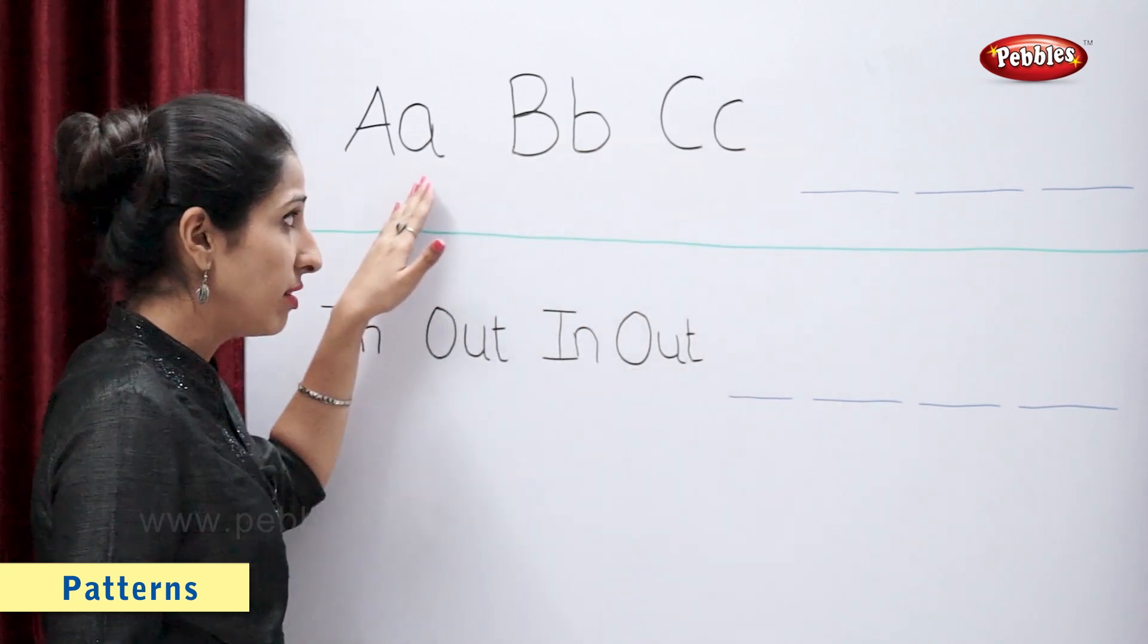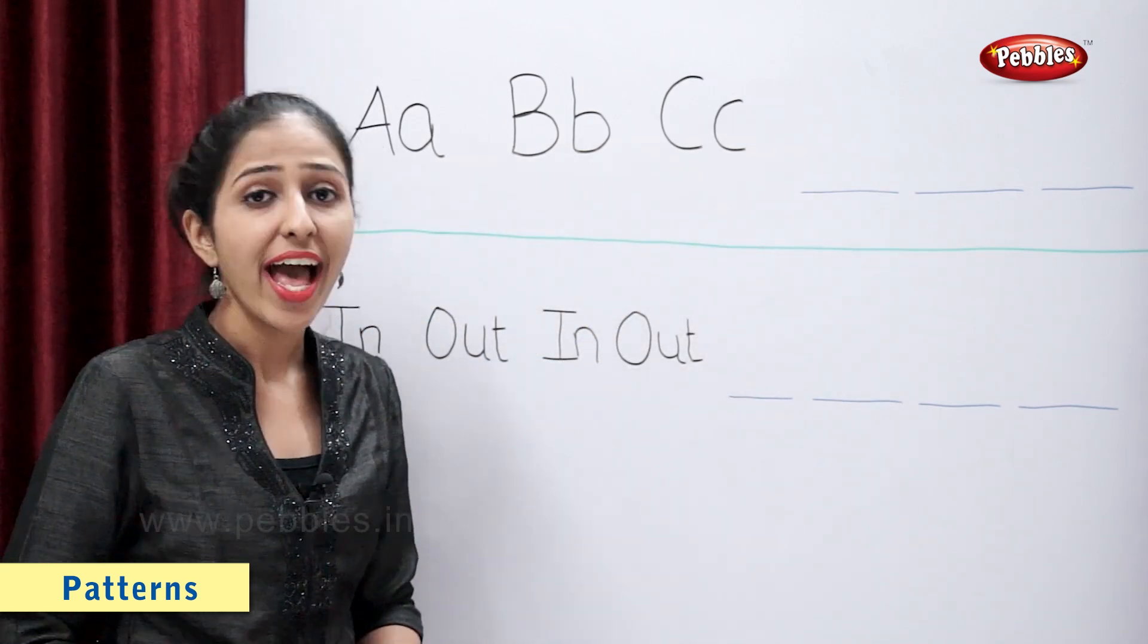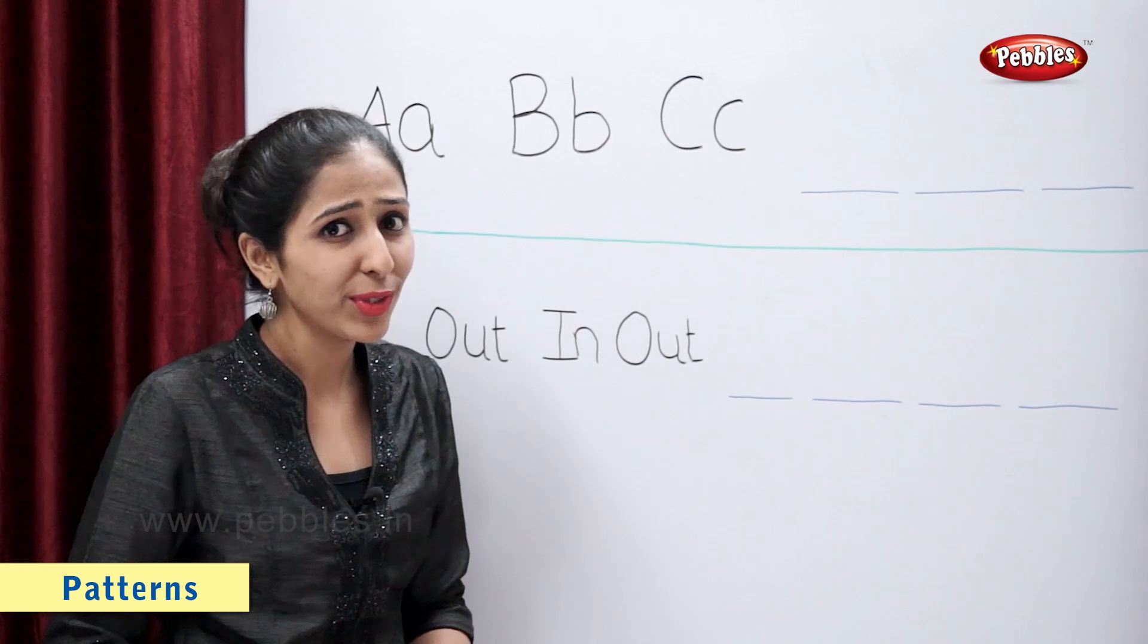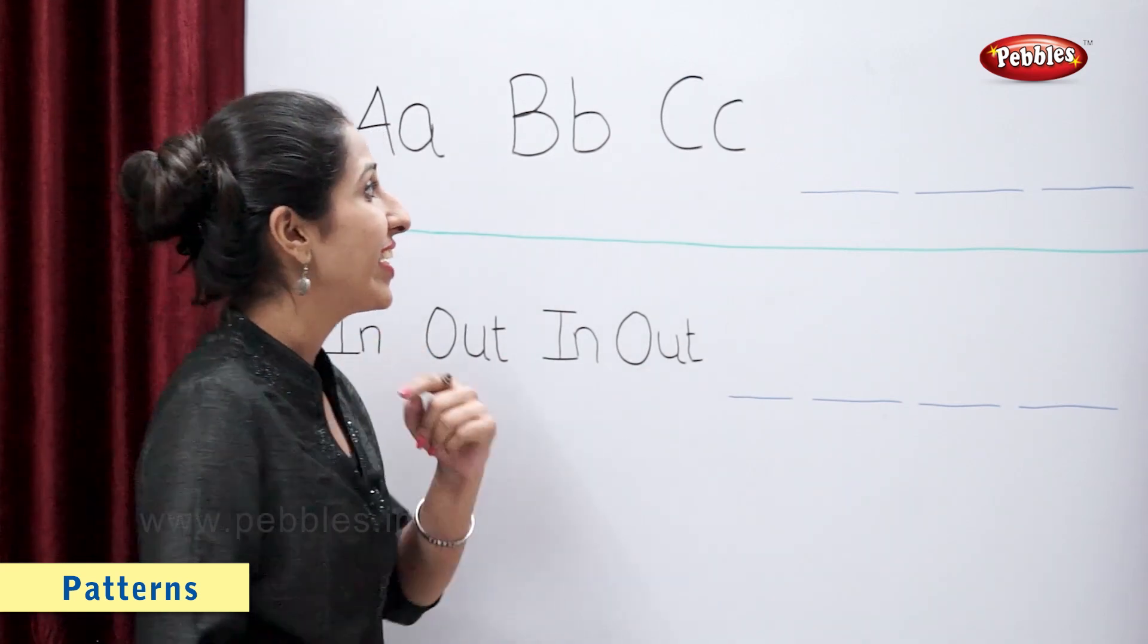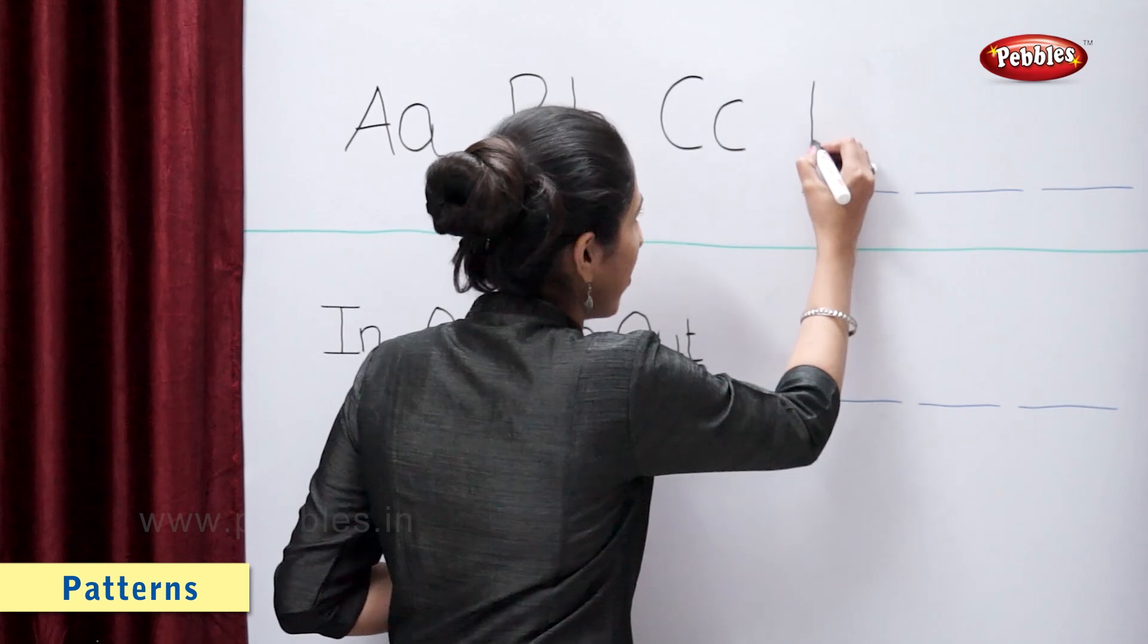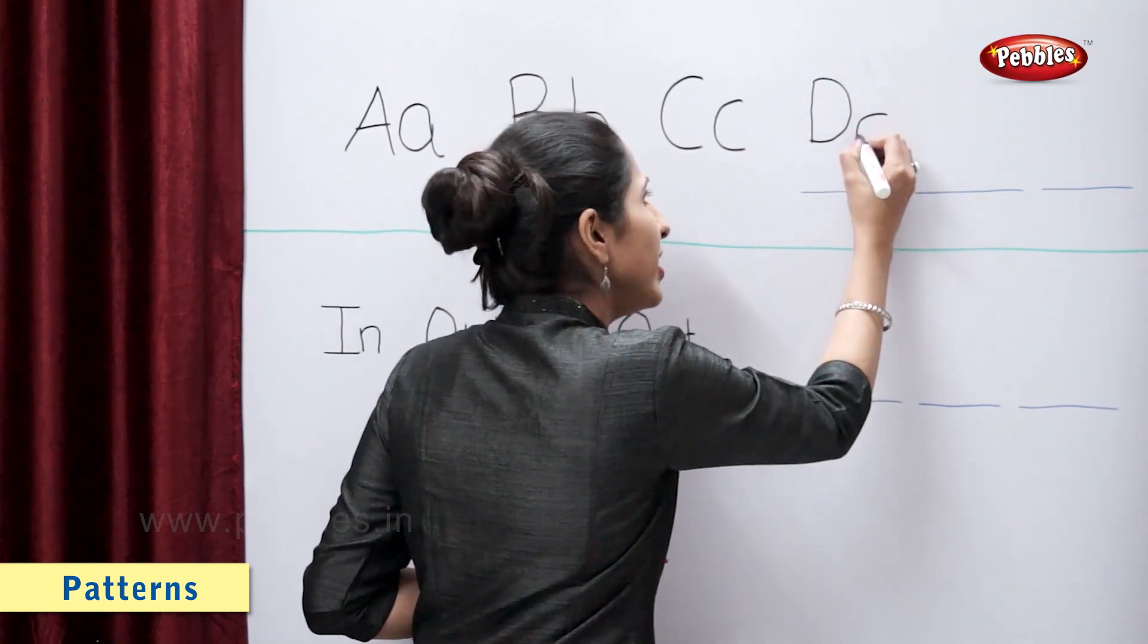So, this pattern follows the sequence of capital and small. Tell me, students, what comes after C? D. Correct. That is, capital D, small d.